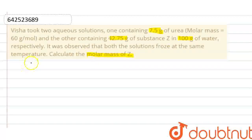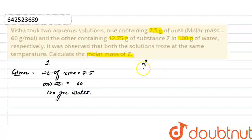So, in this question, there are two solutions. First solution and the second solution. And the given values are: weight of urea is 7.5 and molar mass of urea, that is molecular weight of urea is 60, and they are dissolved in 100 gram of water. Now, there is a second solution. This solution is unknown and weight of solute here is 42.75 and molecular weight we have to find out. And the weight of solvent here is 100 gram.